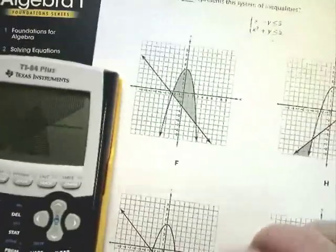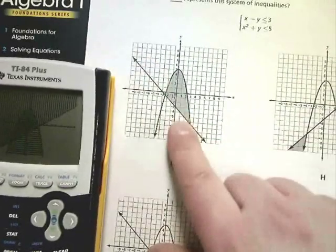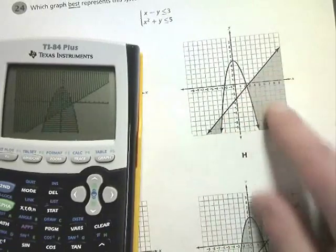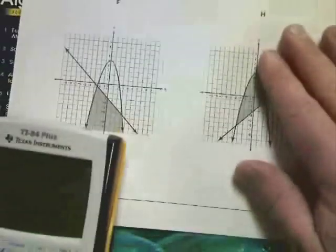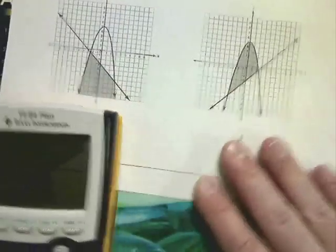So if I look at F, it's still wrong because this one's going in the wrong direction. This one, the lines are right, but the graphing is obviously not. For G, the line's still wrong. You've got this negative. That's wrong.